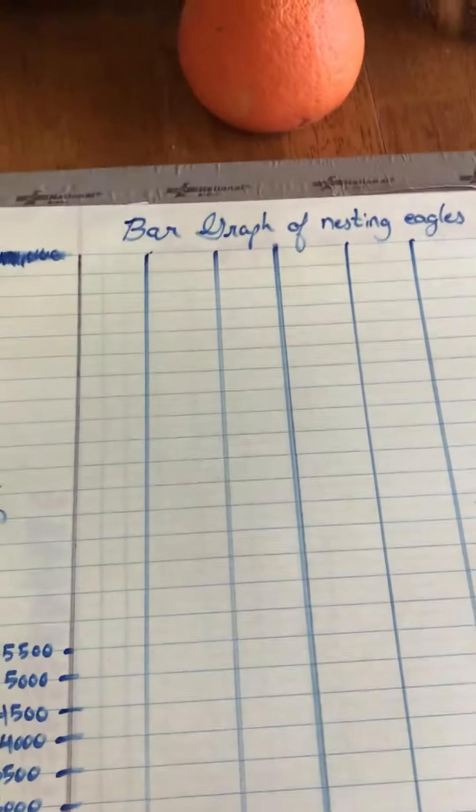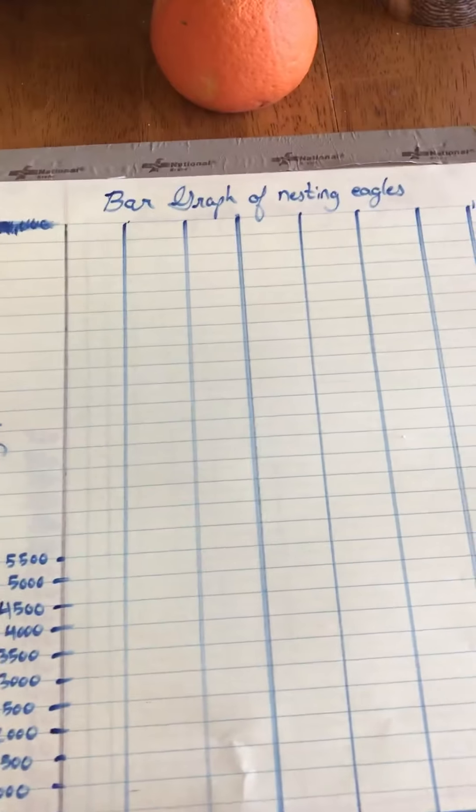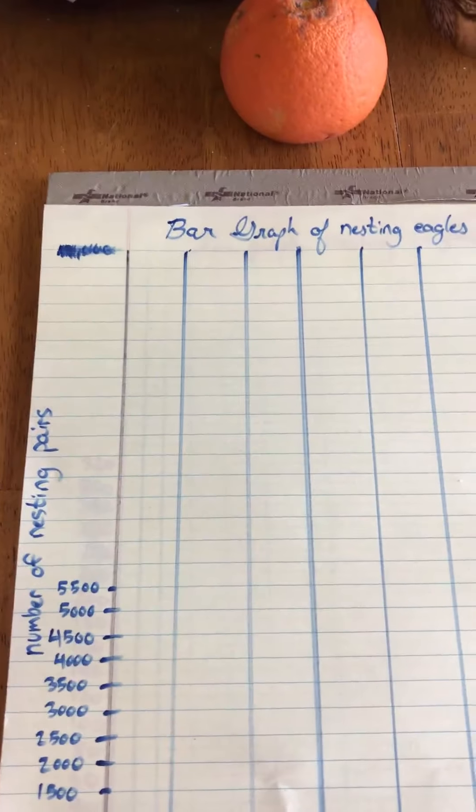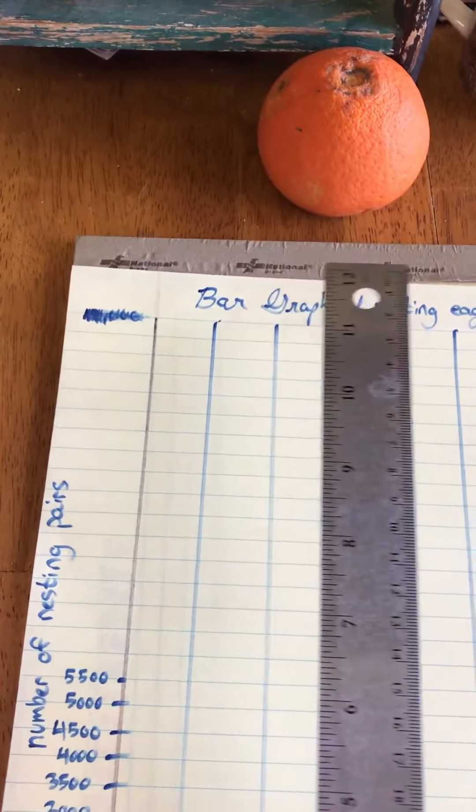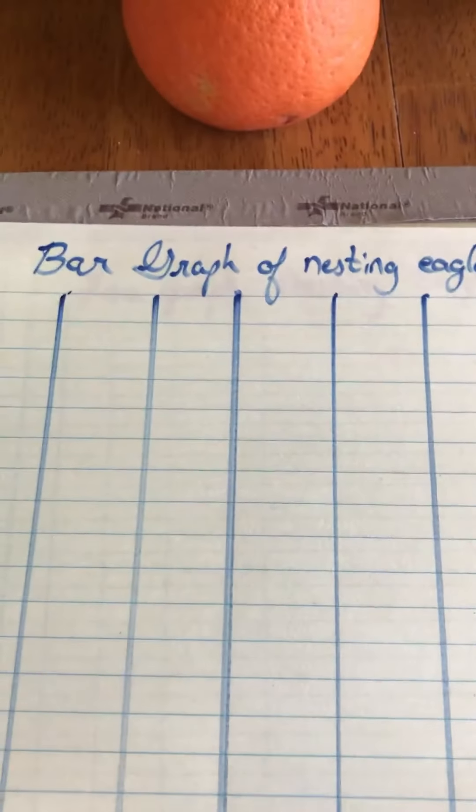Now I have all my graph paper at school and maybe you do too. If you have graph paper at home that would sure help you but if you don't you can do what I did and just use a ruler to make lines on some lined paper. So the first thing that you have to figure out is what exactly am I going to be making a bar graph of? So I wrote that at the top. Bar graph of nesting eagles.